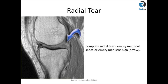Here is an example of a ghost meniscus sign, also called an empty meniscus sign. We are on the medial side of the knee — this is the anterior horn of the medial meniscus — but you cannot appreciate the posterior horn of the medial meniscus; it is absent. This is a classic example of a radial tear.